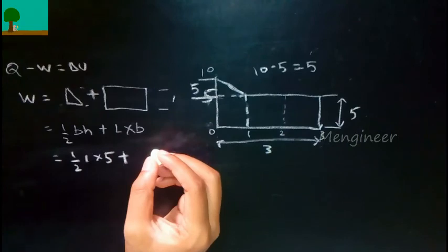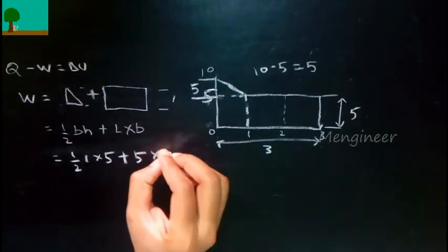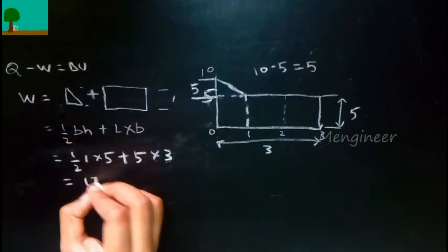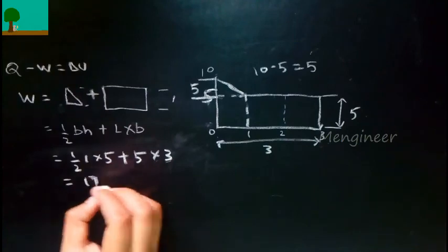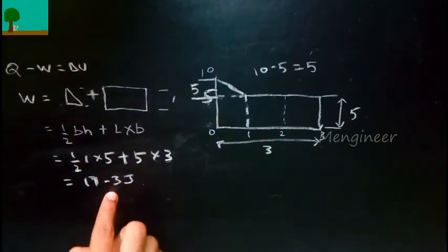The length is 5, so 5 into 3. From the graph, you can find the work.